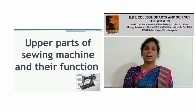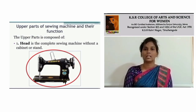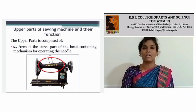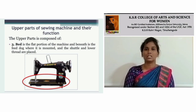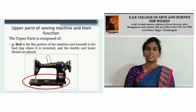Upper part of sewing machine and their functions. The head is the complete sewing machine without the cabinet or stand. In the cover part of the head is the continuous mechanism of operation of the needle. It is the flat position of the machine where the upper and lower threads are placed.